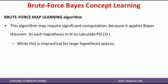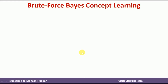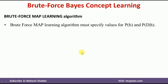While this is impractical for large hypothesis spaces, the algorithm is still of interest because it provides a standard against which we may judge the performance of other concept learning algorithms. It is impractical because when we have a large hypothesis space, we need to calculate the posterior probability of every hypothesis. But it provides a benchmark — we can judge the performance of other concept learning algorithms with the help of Bayes Theorem. So, how do we solve that particular difficulty while calculating the posterior probability, which requires considering both prior probability and likelihood? Is there any way to reduce that computation?